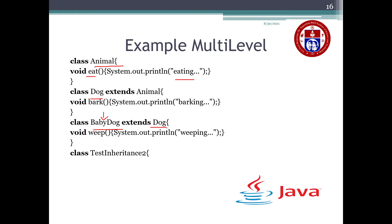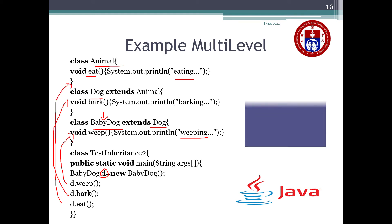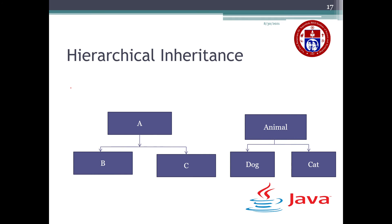Now I am creating a class for the main function. Here I am creating an object for my final child class BabyDog — object name is d. I am calling all three methods: weep, then bark, then eat. First call prints 'weeping', second call prints 'barking', and third call prints 'eating'. So the output is: weeping, barking, eating.